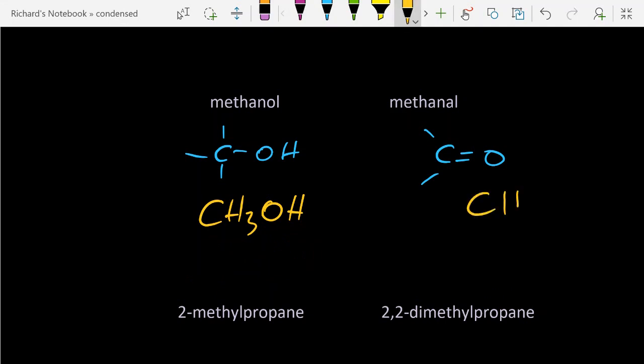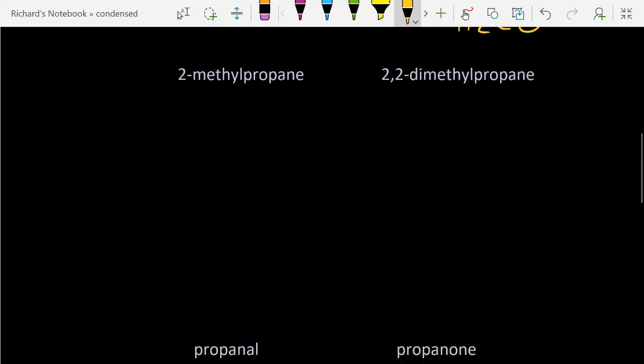And for methanal, well the aldehyde group in the condensed structural formula almost always can be seen as CHO. So I need one more hydrogen there: HCHO. The alternative which is just about acceptable is H2CO. We'd probably let you get away with that since it's unambiguous.